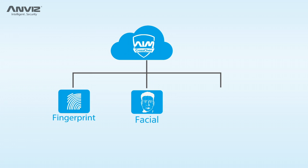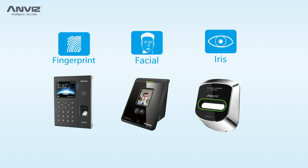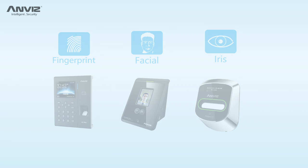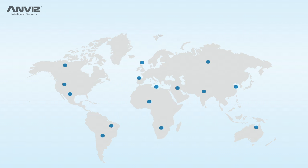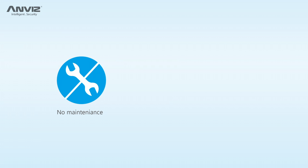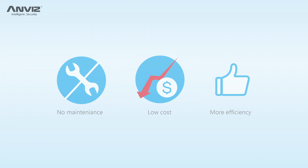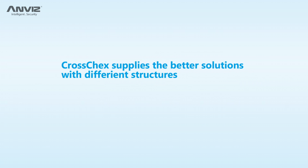Why should you choose Crosschecks? It's easy and quick to connect all Anvis devices. Like your company, Crosschecks is global and translated into multiple languages. Detailed management reports at the click of a button — all leading to a more efficient workplace with less effort and direct maintenance. And Crosschecks is easily scalable to grow with your company.